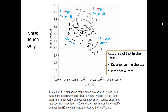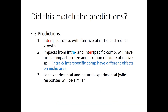The main take-home from Figure 2 is that there is a response in niche use and some divergence, but again inter-specific competition doesn't have similar effects to intra-specific competition. So inter- and intra-specific competition have different effects on niche area — again not what they had anticipated.